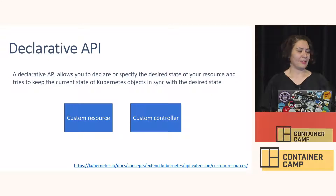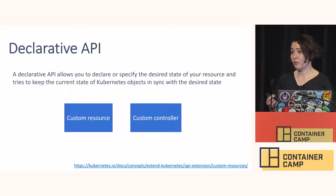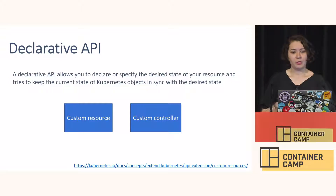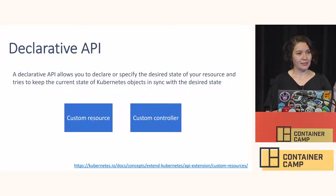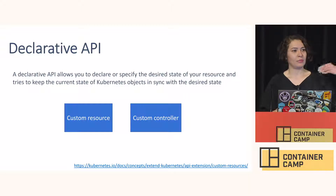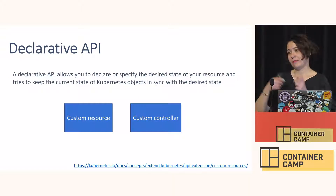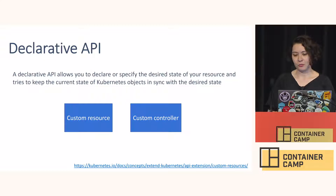A custom resource by itself just saves the Kubernetes object — it doesn't do any operation behind it. You can say, save this structured data and give me back that structured data. But you want to write code around it to say: this is my desired state, make sure it's happening. So you write code to get the desired state, compare it with current state, and keep them in sync. That's the definition of a declarative API, and it's possible with a custom controller.